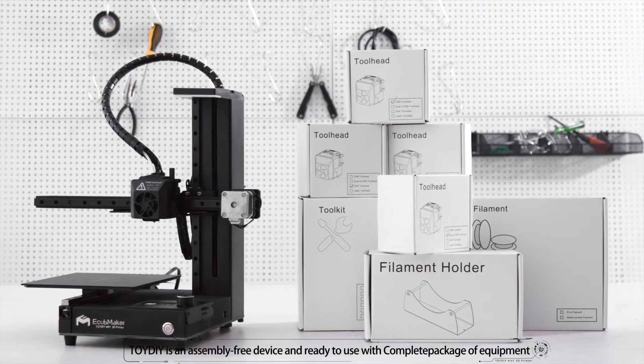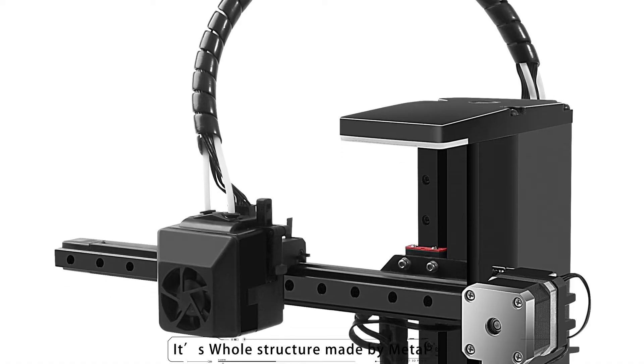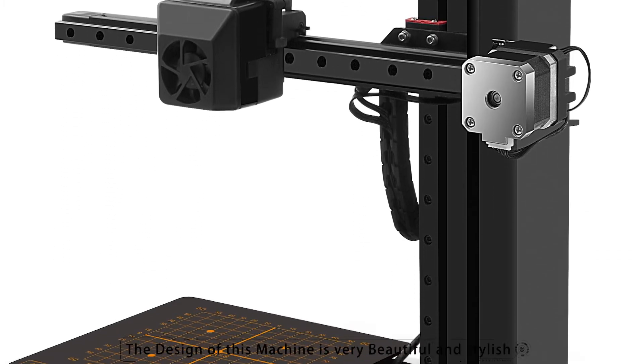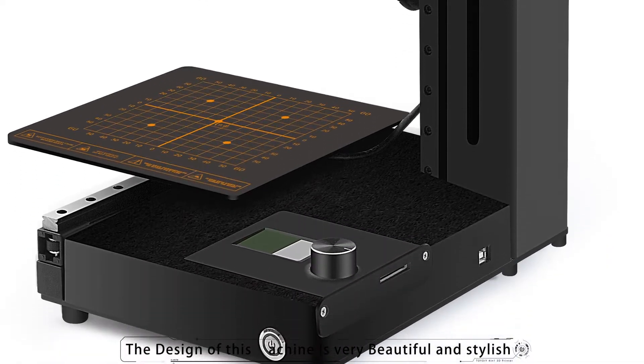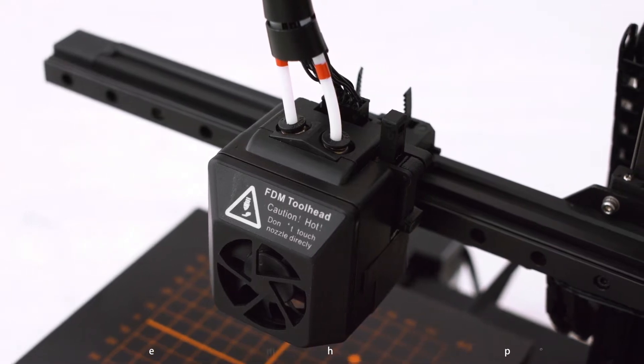Toy DIY is an assembly-free device and ready to use with complete package of equipment. Its whole structure is made of metal. The design of this machine is very beautiful and stylish. The one-arm X-axis design makes the whole machine smaller and more compact.